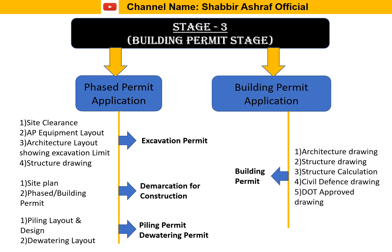For the final building permit application, we require architecture drawing approval, structural drawing approval, structural calculation approval, civil defense drawing approval, and DOT approved drawings. Once all these drawings are in hand, we apply for the building permit application and get the approval, which takes approximately two weeks. This completes the sequence of all permit applications.